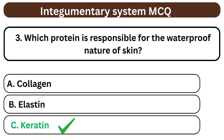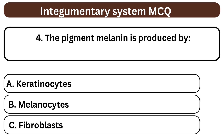Question 4. The pigment melanin is produced by A. Keratinocytes. B. Melanocytes. C. Fibroblasts. The answer is B. Melanocytes.